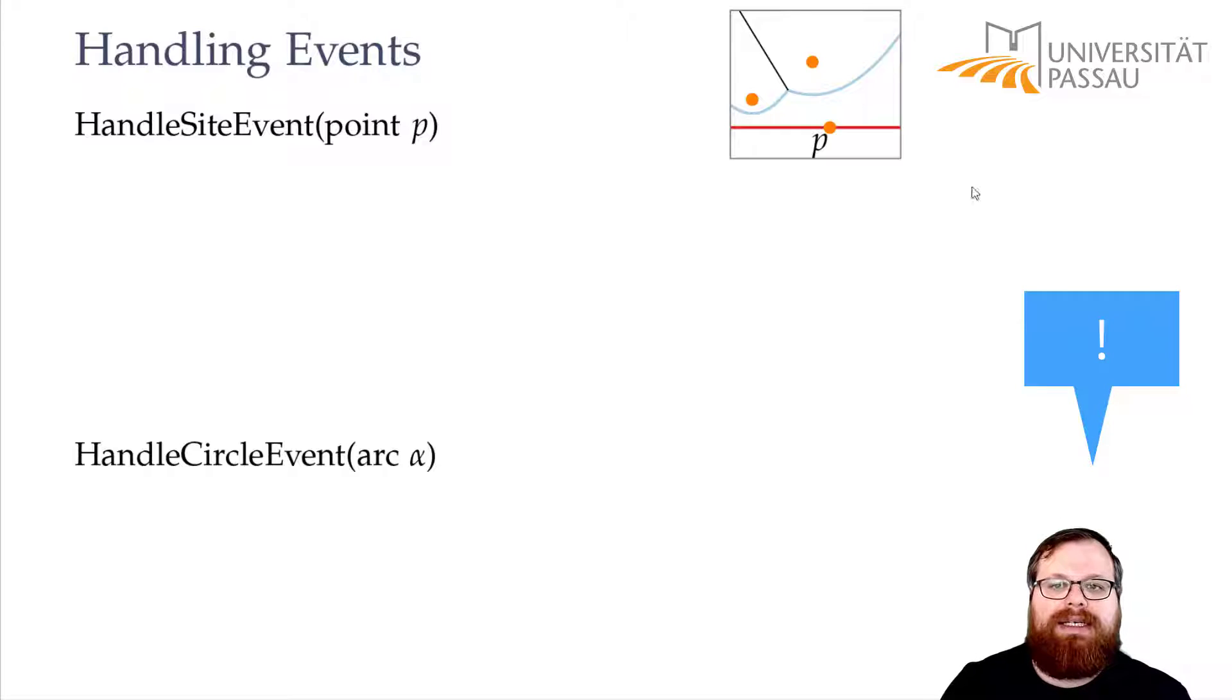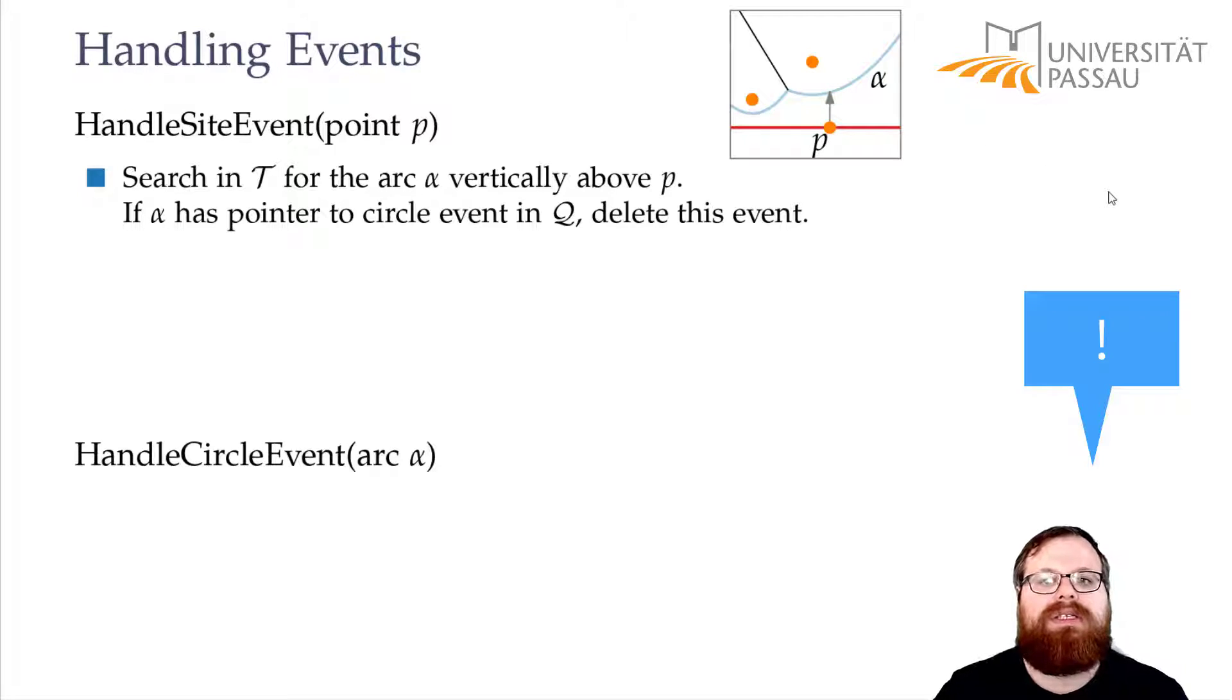Well, at the point that this site is reached, a new parabola starts in p. And in the beginning, it just goes straight upwards. So we have to find in our data structure what is the arc that's directly vertically above p. And since this is y-monotone, we can do a binary search in the binary search tree and we can find it.